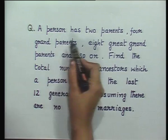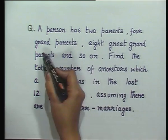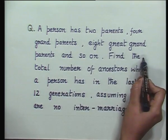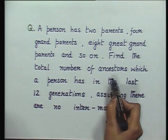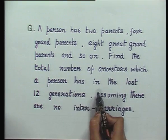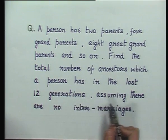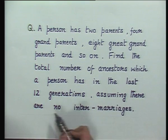Today, we are continuing with the same result and we are going to consider some direct and some indirect applications of it. To start with a simple and interesting problem, the question says: a person has 2 parents, 4 grandparents, 8 great-grandparents, and so on. Find the total number of ancestors which a person has in the last 12 generations, assuming there are no intermarriages.